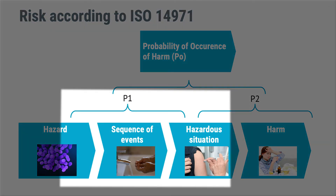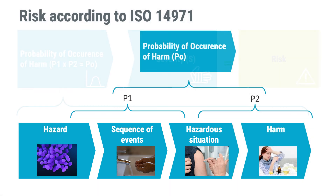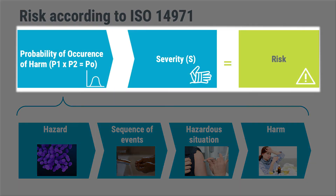As mentioned, the software itself cannot cause harm — it needs to act through something, either via physical means or an operator. Therefore, software risk management mainly concentrates on P1 and how the software contributes to hazardous situations. Even though P1 is the primary interest for software, both severity and risk are essential as they provide guidance on which risks are the most significant and where you should concentrate your efforts the most.